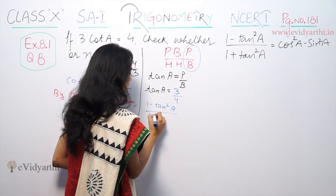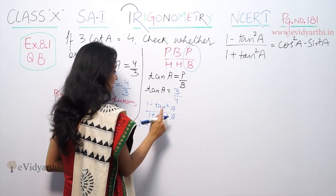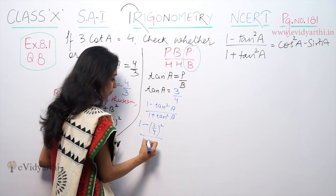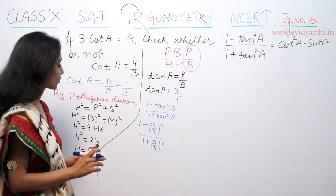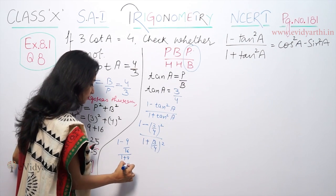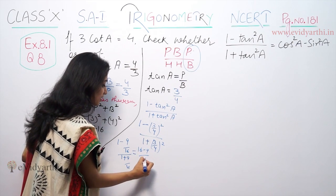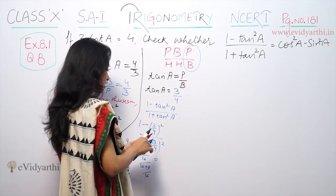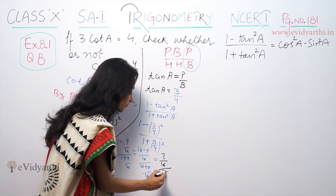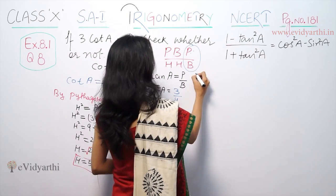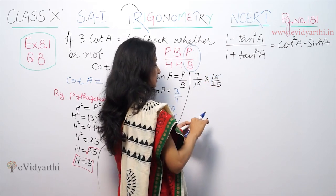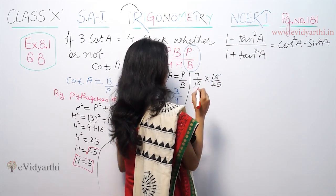1 minus tan square A upon 1 plus tan square A. 1 minus 3 by 4 whole squared upon 1 plus 3 by 4 whole squared. This equals 1 minus 9 by 16 upon 1 plus 9 by 16, which is 16 minus 9 is 7 upon 16, divided by 16 plus 9 is 25 upon 16, giving us 7 by 25.